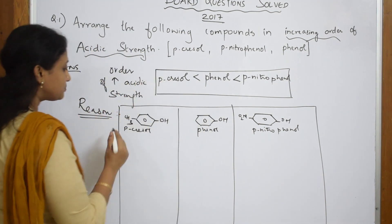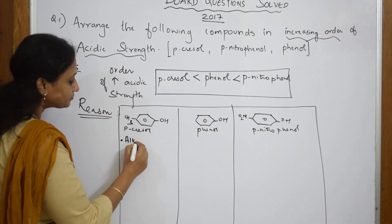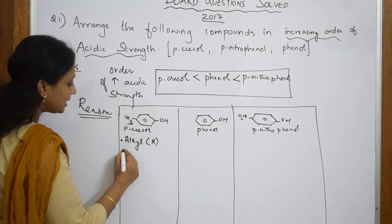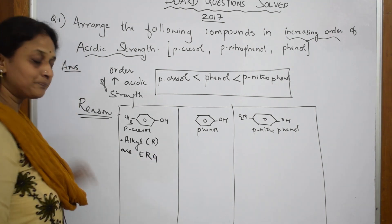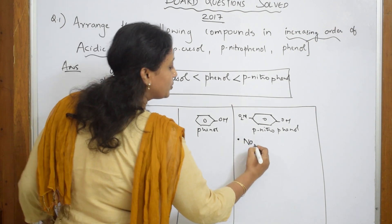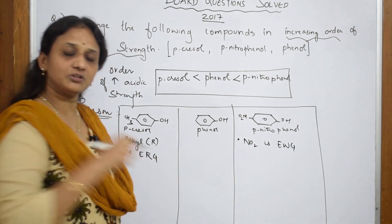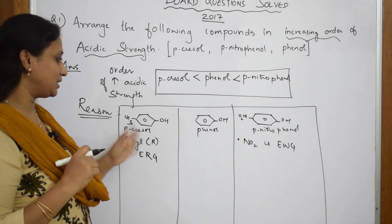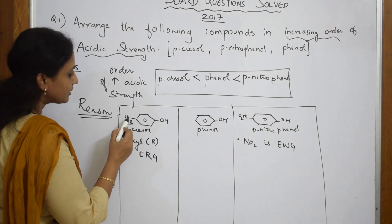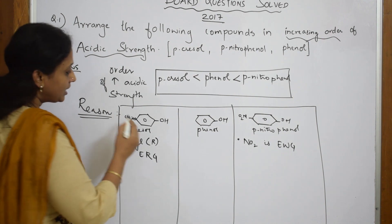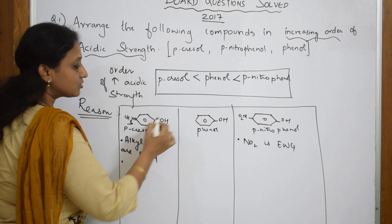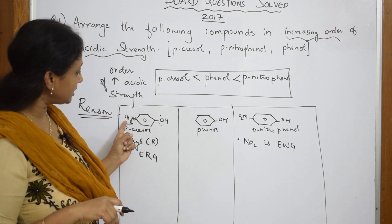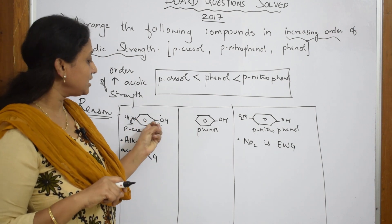Now, what are you observing? In all three compounds you have phenol, but the difference is: in paracresol you have a methyl or alkyl group, and in paranitrophenol you have a nitro group. The key difference: alkyl groups are electron-releasing groups — they keep on releasing electron density. Nitro group, on the other hand, is an electron-withdrawing group — it pulls out electron density from oxygen.